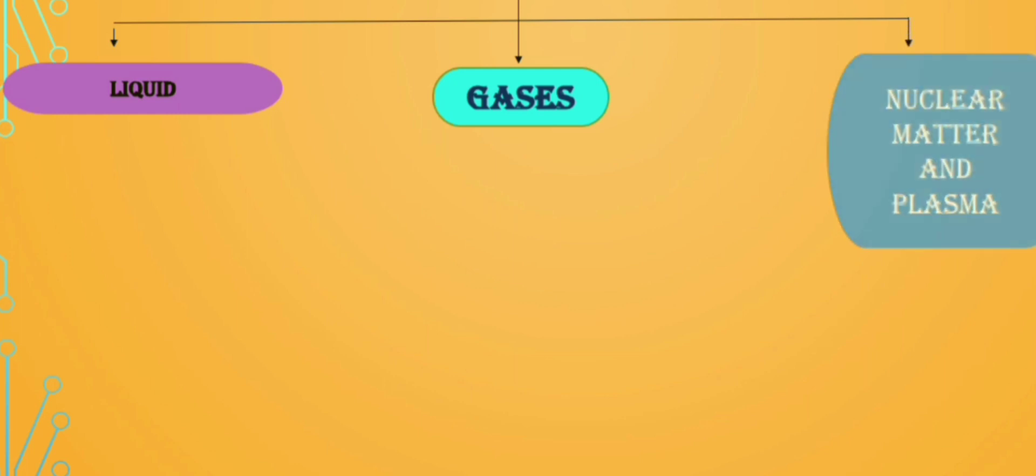Let's make it more clear with the help of some examples. Examples of fluids are liquids and gases. Can you name any other examples? Just think about it. Okay, I'll give two more examples for fluids: nuclear matter and plasma.